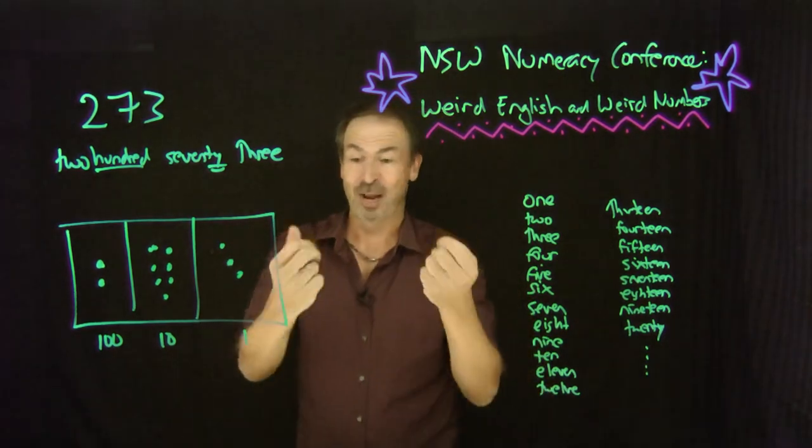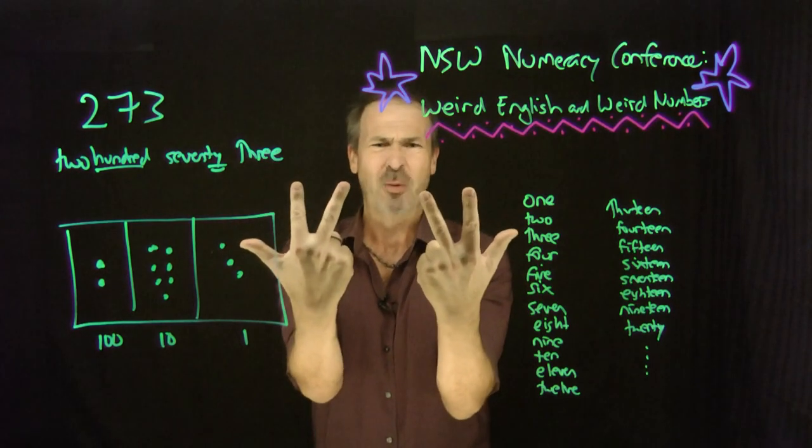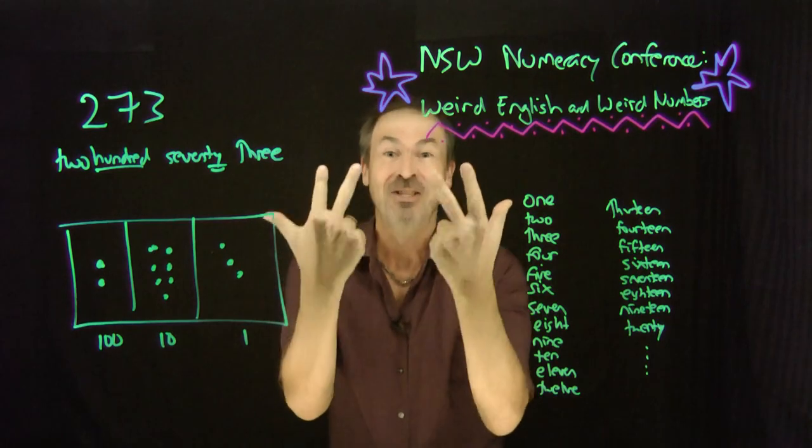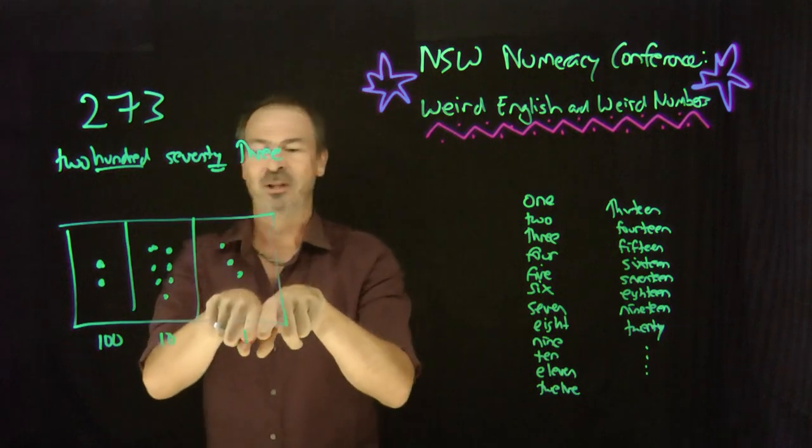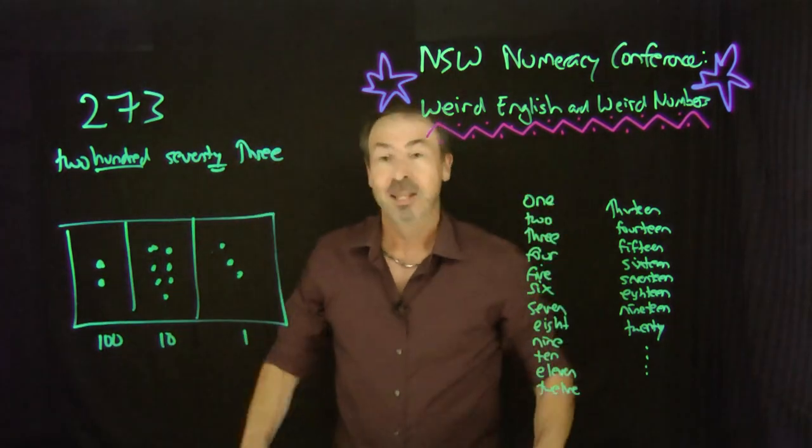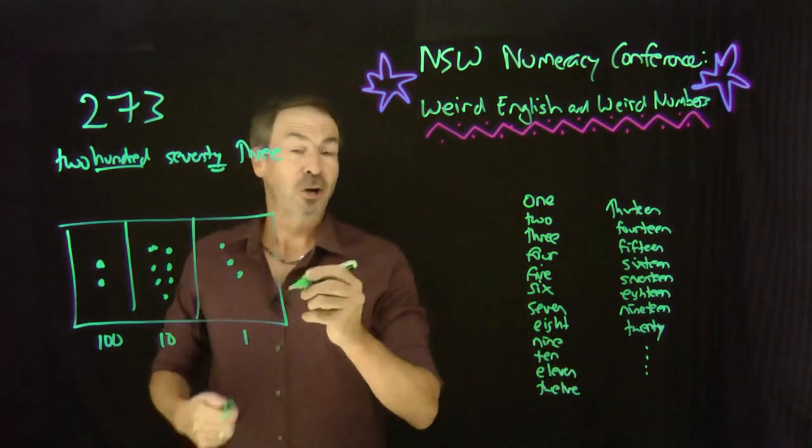We've gone base 10 because of this. I happen to know that Martians only have two hands with three fingers per hand. They think we humans are weird. Why would you go with the number 10 for counting? 6 is a much more natural number for counting. So Martians go base 6. Because of our humanness, we went with base 10 and write all our numbers in terms of ones, tens, and powers of tens. Beautiful.